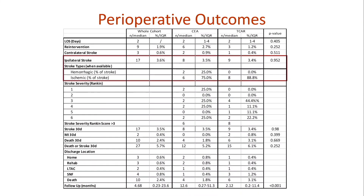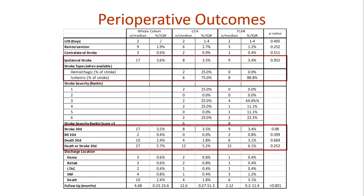Looking at the meat of the study — perioperative outcomes — there were 8 strokes in the CEA group and 9 strokes in the TCAR group. Breaking down by stroke type, the majority were ischemic: 75% ischemic in the CEA cohort and 88% in the TCAR cohort. We assessed stroke severity by modified Rankin score, where zero is no symptoms and six is death. Looking at stroke rate, MI rate, death rate at 30 days, and combined death-and-stroke rate, there was no statistically significant difference between the CEA and TCAR cohorts in all these symptomatic lesions.